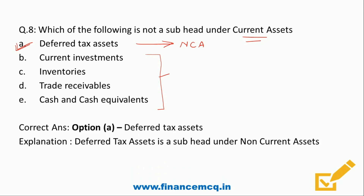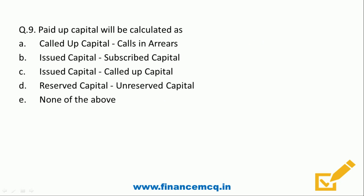Question nine: paid-up capital will be calculated as — option A: called-up capital minus calls in arrears, option B: issued capital minus subscribed capital, option C: issued capital minus called-up capital, option D: reserved capital minus unreserved capital, option E: none of the above.